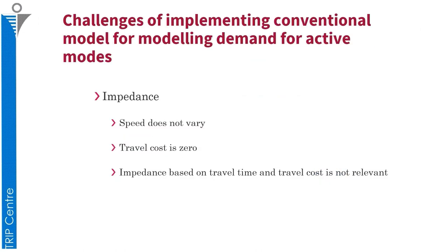When estimating a mode choice model, we need to consider impedance — the cost that people incur when travelling by a particular mode. However, the conventional variables cannot be applied effectively for active modes. For example, the speed does not vary significantly and travel cost is zero, so impedance based on travel time and travel cost is not relevant for such studies.